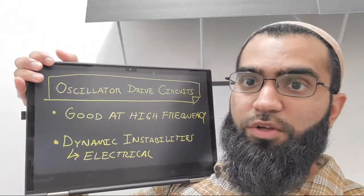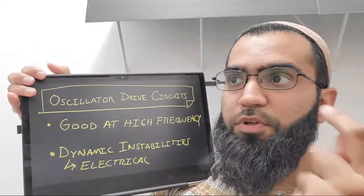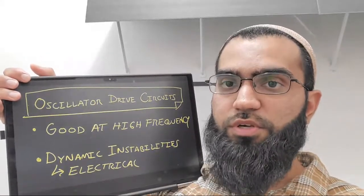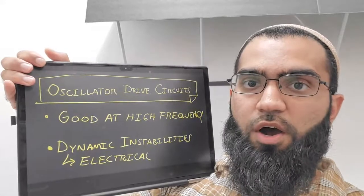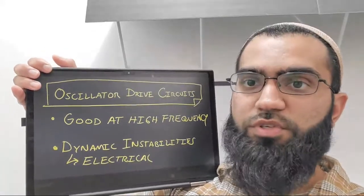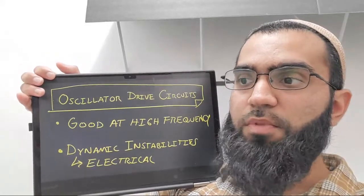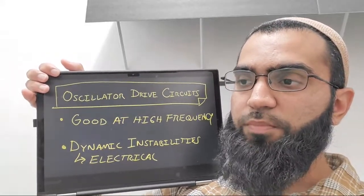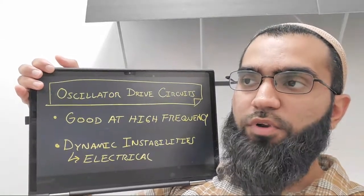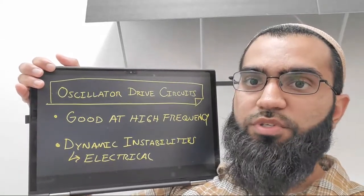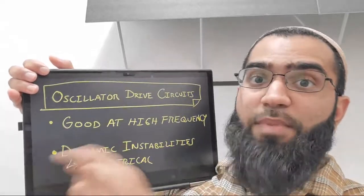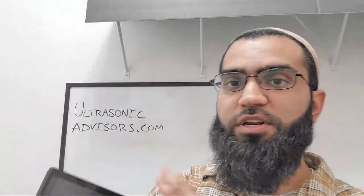One really good thing about the oscillator drive circuit, in addition to being simple in terms of number of components, is that it is very good at high frequencies. That's unlike op-amp drive circuits — the high-voltage ones struggle at high frequencies and are more of a niche item. Oscillator drive circuits are often used for higher-frequency devices operating under a constant load, where there's not a lot of dynamic instability.